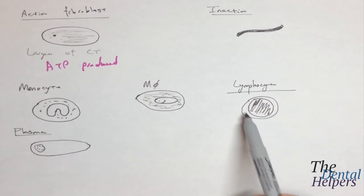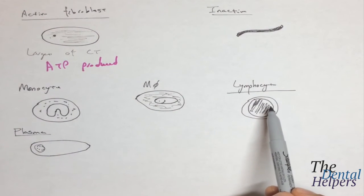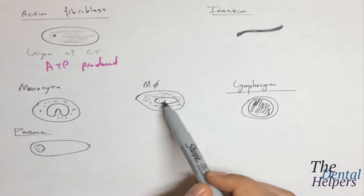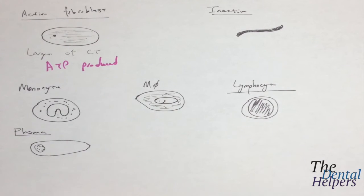The lymphocytes, the nucleus takes up most of the cell itself. The macrophage has a smiley face, the monocytes have the U.